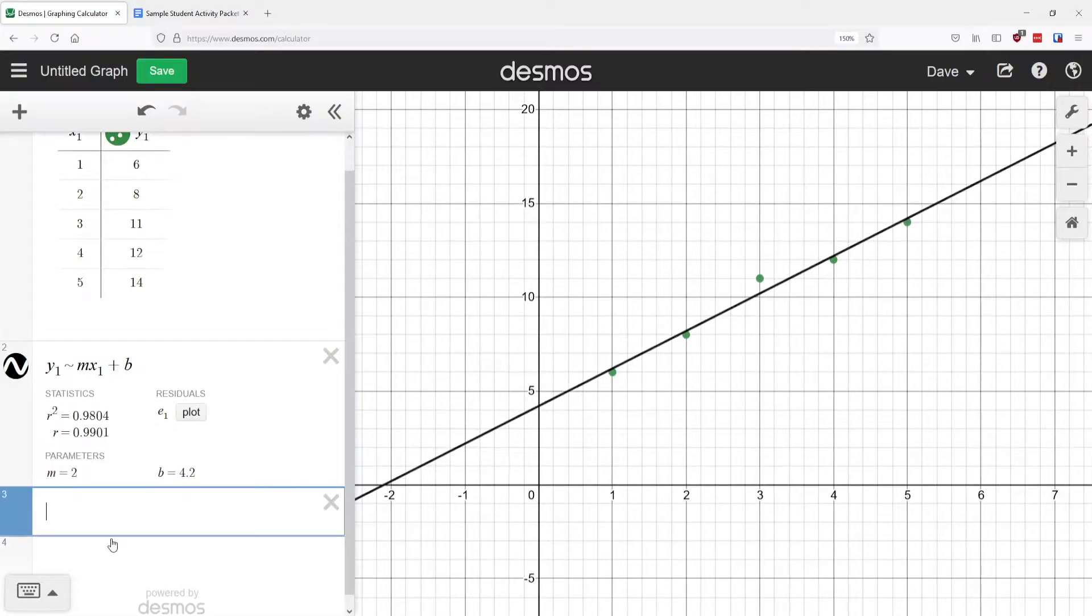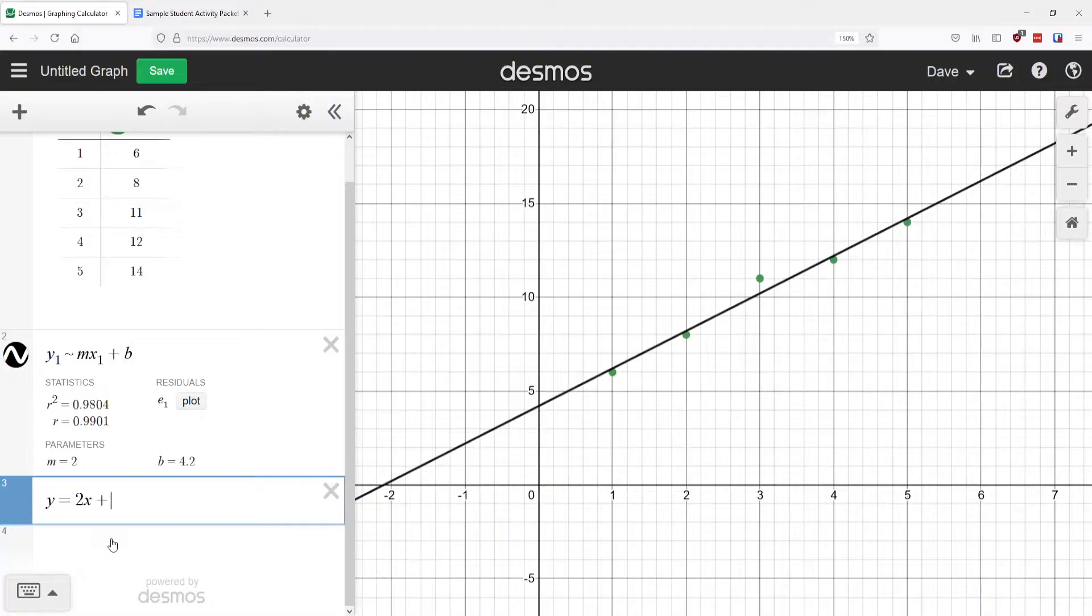So if you know our equation, Y equals MX plus B, let's type that in. Y equals an M value of two. So instead of writing MX, I'm going to write two X. And then plus B.